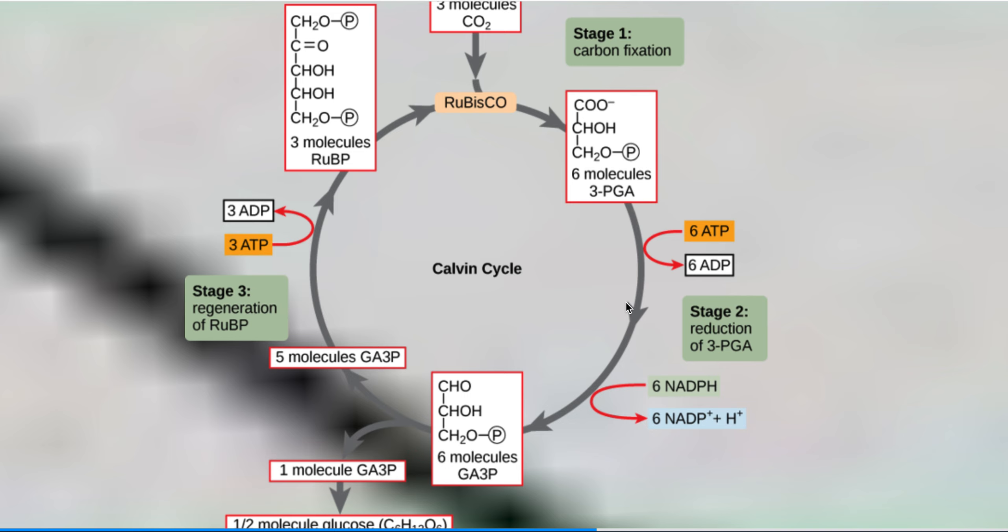And what rubisco does is it takes RUBP, which is a five carbon compound, and attaches a carbon dioxide to that RUBP and splits it into two molecules of PGA. So five carbons plus one carbon gives you two molecules that are three carbon compounds. And that stage is called carbon fixation.